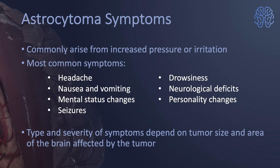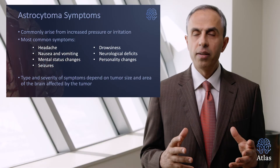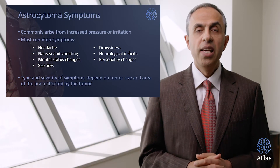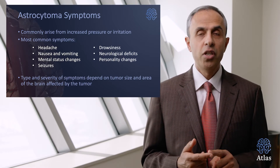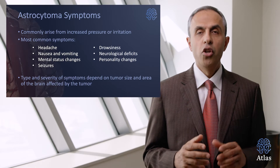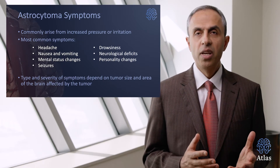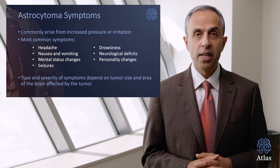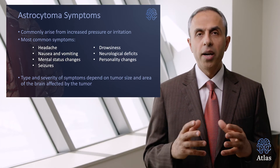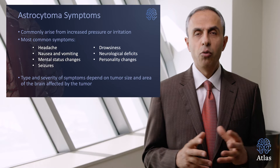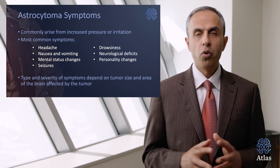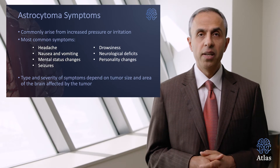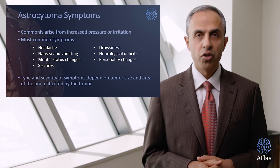What are the symptoms of astrocytomas and gliomas in general? These symptoms are shared across all three classes of tumors and typically include headaches, nausea, vomiting, mental status changes, seizures, drowsiness, neurological deficits such as weakness and numbness in parts of the body, and personality changes. Especially among higher-grade gliomas and glioblastomas, because these tumors are very infiltrative, they affect a larger portion of the brain and can cause significant confusion and personality changes.